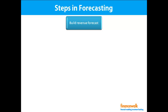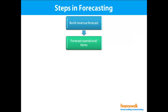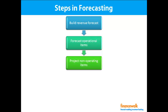The second step is forecasting operational items such as operating cost, working capital, and property, plant and equipment, by linking them to revenue or volume. The third step is to project non-operating items such as investments in unconsolidated subsidiaries and related income, as well as interest expense and interest income.